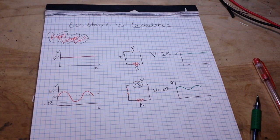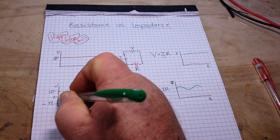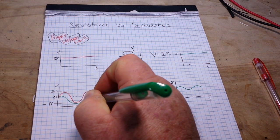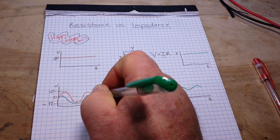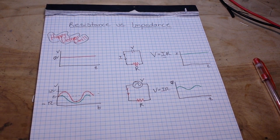And with just a resistor on here, our current will be in phase with the voltage.